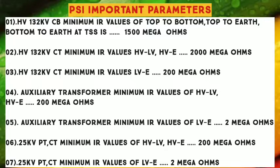Number 2: HV 132 KV CT Minimum IR Values HV-LV and HV-A — 2000 Mega Ohms. Number 3: HV 132 KV CT Minimum IR Values LV-A — 200 Mega Ohms.